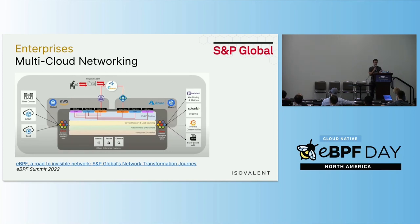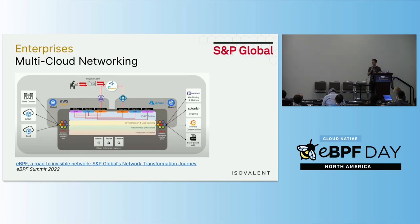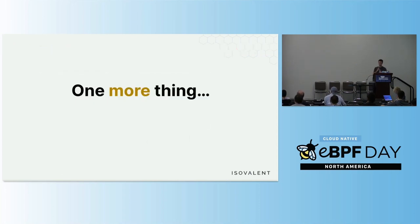In multi-cloud networking for enterprises, there was a fantastic presentation at eBPF Summit a couple of weeks back where S&P Global presented how they're using eBPF with Cilium for a multi-cloud networking layer, essentially redefining how they think about networking. The talk was called 'A Road to Invisible Network: S&P Global's Network Transformation Journey.' You can find the recording at ebpf.io.